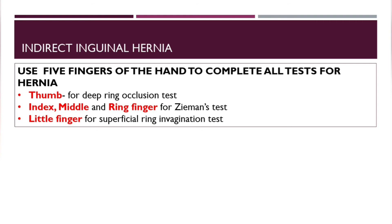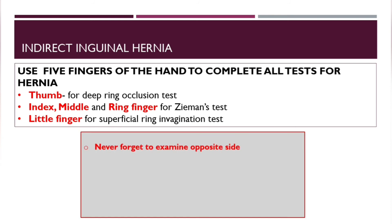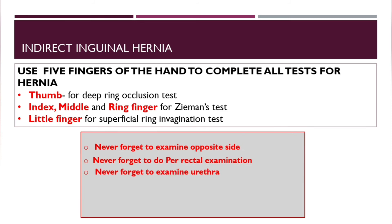Some important rules to remember in examination of hernias: never forget to examine the opposite side, never forget to do a per-rectal examination, never forget to examine the urethra, and never forget to check the abdominal muscle tone.